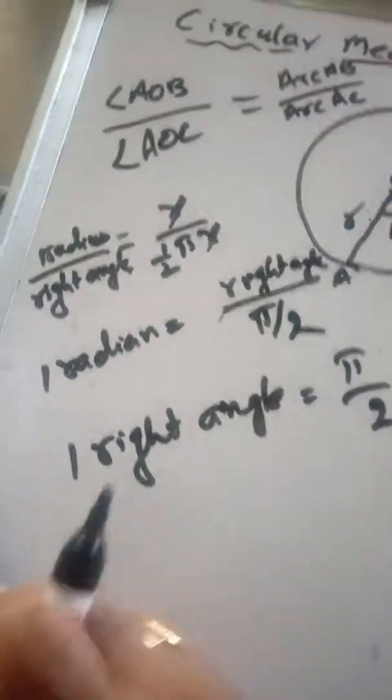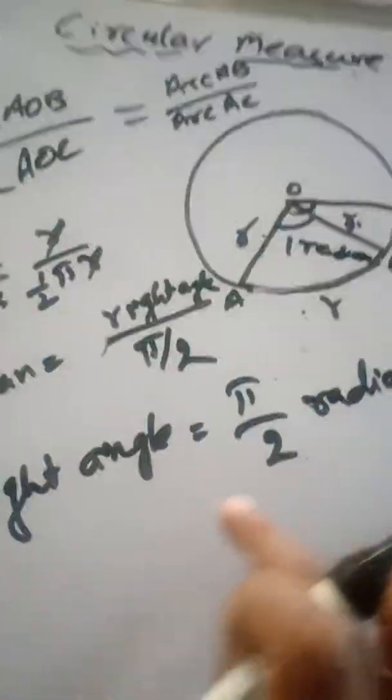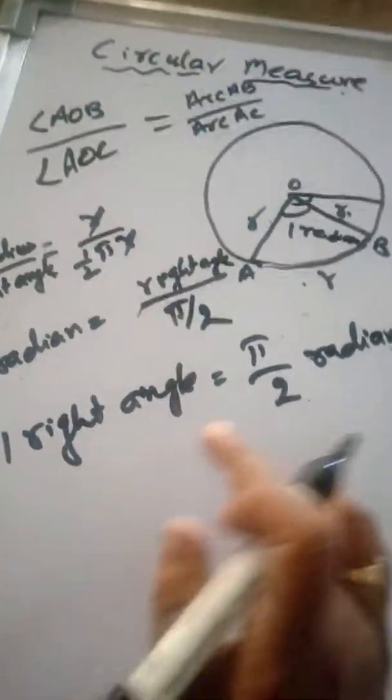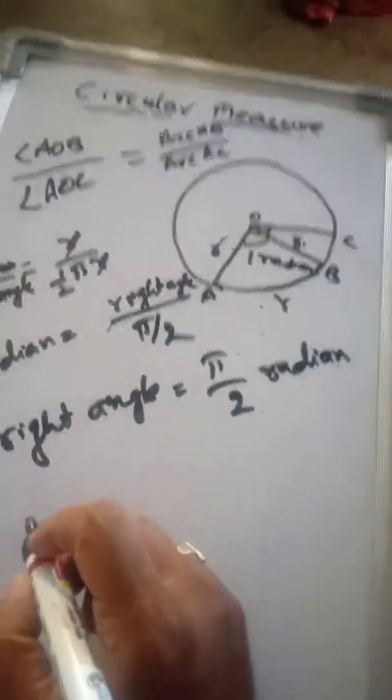This is a bit difficult to understand, that's why I skipped this lesson. But the simple thing is: one right angle equals π/2 radians. I've explained how it comes. So from now on, just directly use this formula.